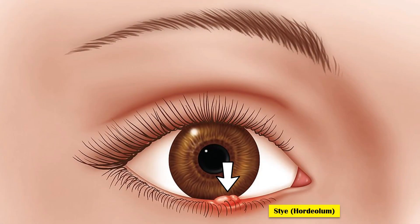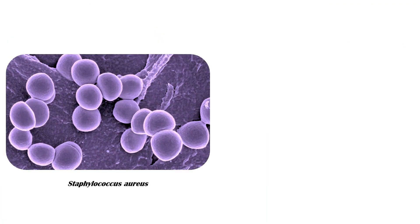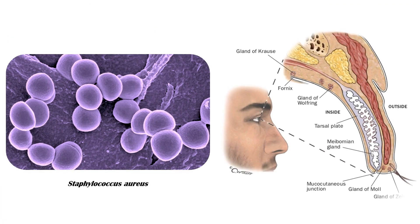A stye, medically known as hordeolum, is a common infectious disease of the eyelid. It is usually caused by the bacterium Staphylococcus aureus, and it involves either the glands of Zeis or, less frequently, the meibomian glands.